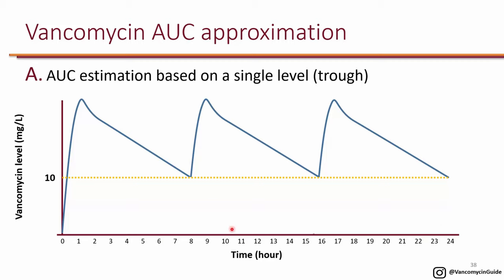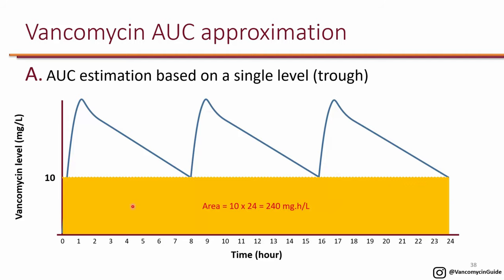If you get only a single trough level, can you estimate what the AUC would be? Because the AUC is the area under the curve, if you have a trough of 10 you can say the level never goes below 10. So you can say the area under the curve is at least 10 times 24, which is 240. But you also have all the area at the top, which we don't know because we don't know what the peak is. So getting only a trough only allows you to estimate the AUC.